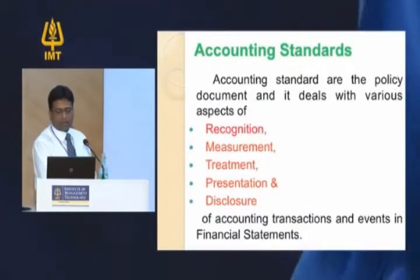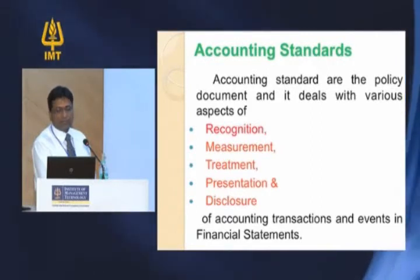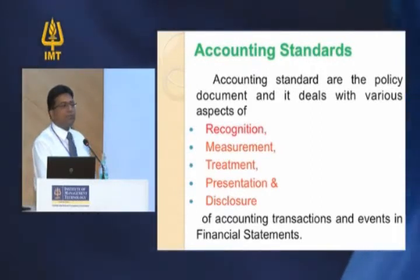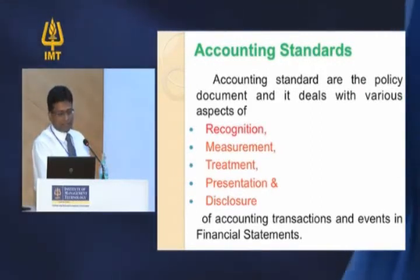Accounting standards basically deal with five aspects: recognition, measurement, treatment, presentation, and disclosure of accounting events and transactions.